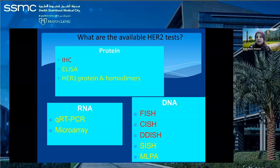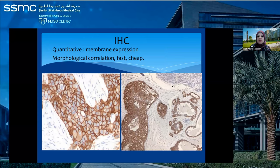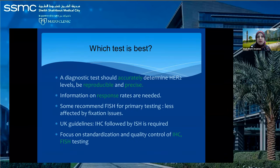For testing of HER2 expression in breast cancer, we have many tests — some based on protein expression, some on DNA, some on RNA. But the one we use daily as pathologists is immunohistochemistry, looking for strong membrane positivity for HER2. It is quantitative and allows morphological correlation — for example, we exclude DCIS from our scoring. Normal breast should be negative; DCIS is often positive but excluded from scoring. It's fast, cheap, and reproducible. We also use FISH — fluorescence in situ hybridization — for HER2. A diagnostic test should be accurate, reproducible, and precise: if we test the same sample several times in several labs, we should get the same results.